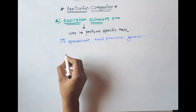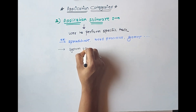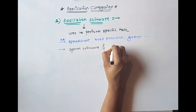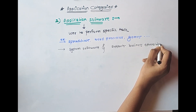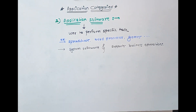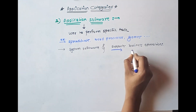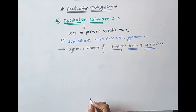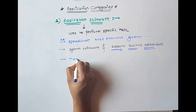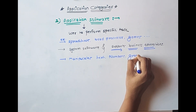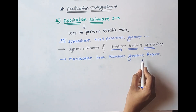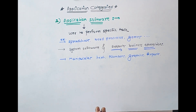Application software uses system software and supports business operations. With the help of system software, application software supports business operations. Typically, application software manipulates text, numbers, graphics, and reports.